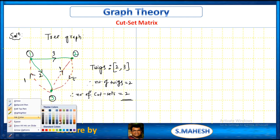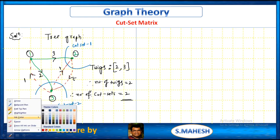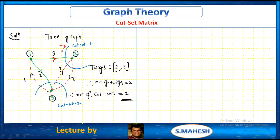How can we get the cut sets? Based on the twig, which covers the twig only. This is cut set 1, and this is cut set 2. Cut set direction: cut set 1 is clockwise. We don't have a cut set at node 1 because that node involves two twigs. Only one twig is allowed per cut set.